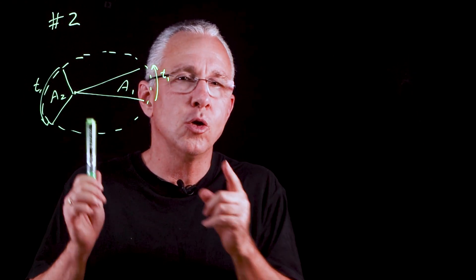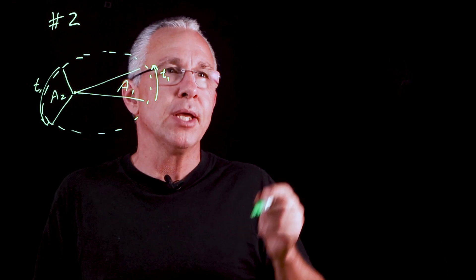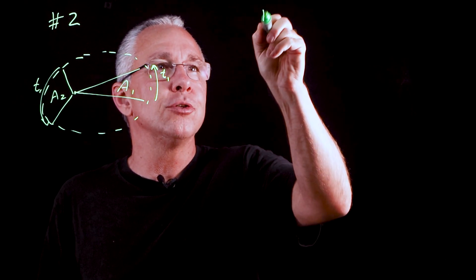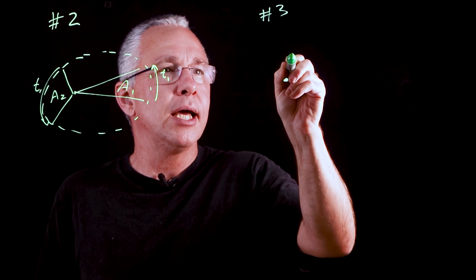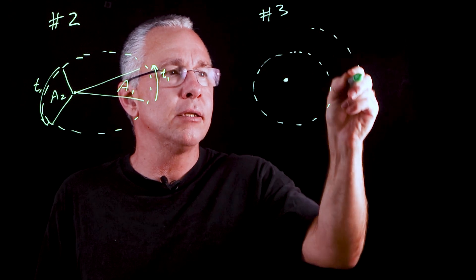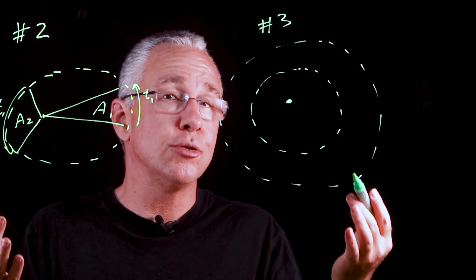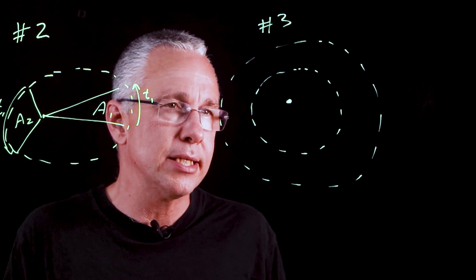Kepler's third law looks not at one planet moving in an ellipse but looks at multiple. And in this case if you were to get our star and you would examine any planet moving around that star, I'm going to use two planets here but I could use many planets as long as they're revolving around the same object.